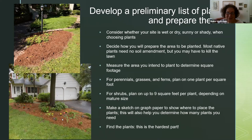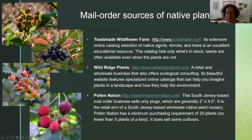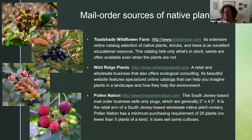Next step: finding the plants — and that's the hard part. Finding pure species native plants is getting easier, but it's not easy. There are three sources on your resource list. Always when coming up with your plant list, have two or three selections for each plant you want because you may not find the exact species. Plants sell out, which is why it's a good idea to prepare your site in fall, order your plants over the winter, and you know you'll have them in spring.